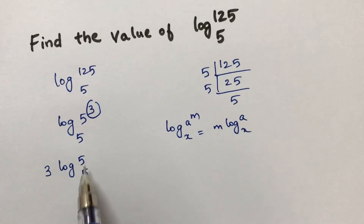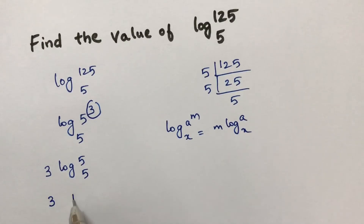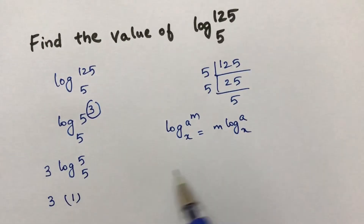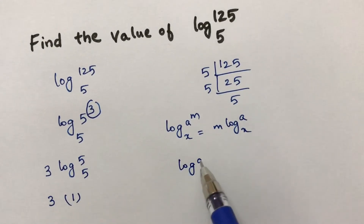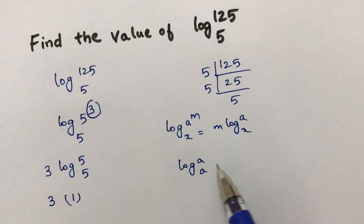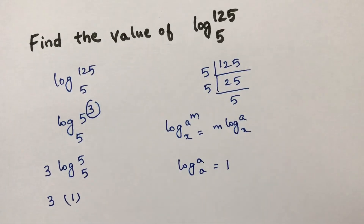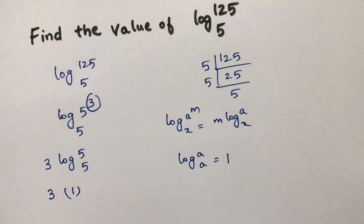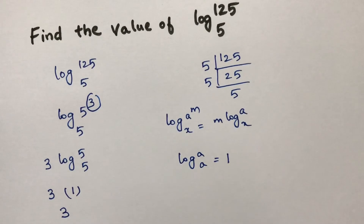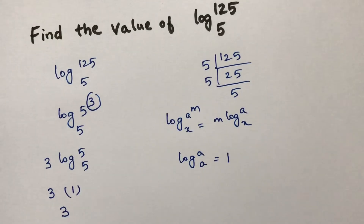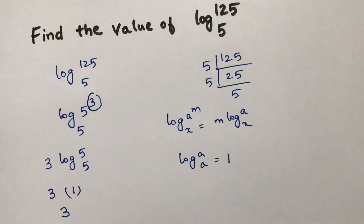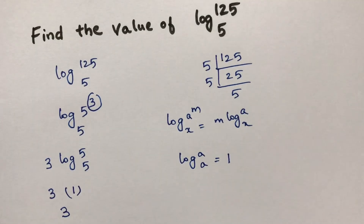Now log 5 to the base 5 equals 1, because the logarithm of a number to the same base is 1. So 3 times 1 is 3. Therefore, the value of log 125 to the base 5 is 3.